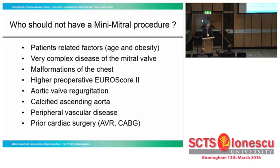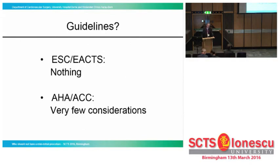Some consider aortic valve regurgitation more than 2+ to be a problem in these patients, as a calcified ascending aorta might also be difficult to clamp in this situation. Some recommend performing the operation in fibrillation. Peripheral vascular disease — we have seen there are alternative routes to cannulate the arterial system — and prior cardiac surgery cannot always be considered an absolute contraindication.